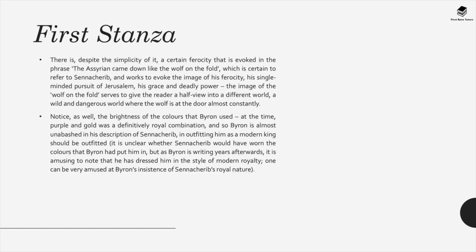In the first stanza, despite its simplicity, there is a ferocity evoked in the phrase 'the Assyrian came down like the wolf in the fold.' This refers to Sennacherib and evokes his ferocity, his single-minded pursuit of Jerusalem, and his deadly power. The image of the wolf on the fold gives the reader a view into a wild and dangerous world where a predator is constantly at the door.